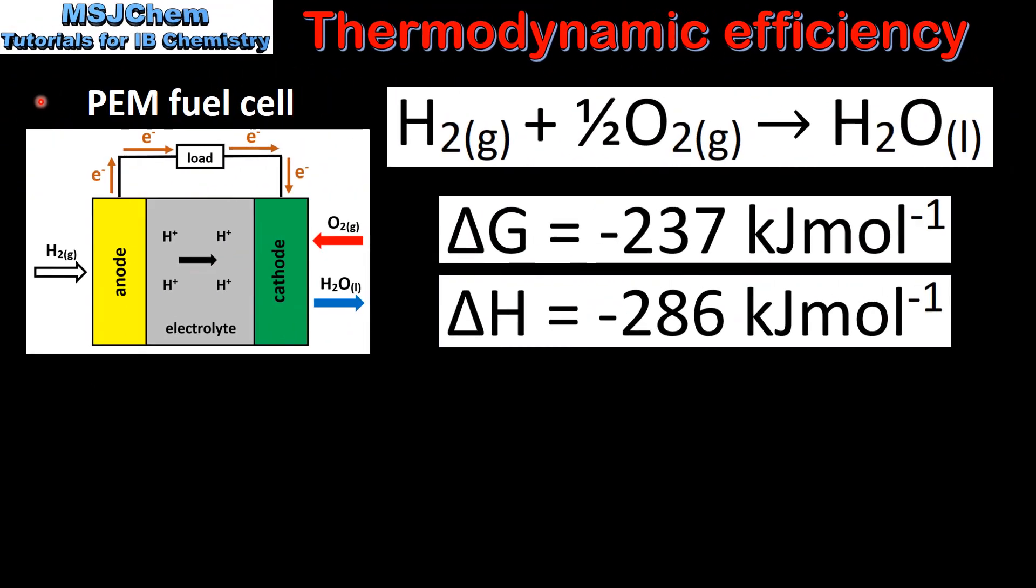Next we'll calculate the maximum efficiency for a PEM fuel cell. In this fuel cell hydrogen gas is oxidized at the anode and oxygen gas is reduced at the cathode to form water which can be represented by this overall equation.